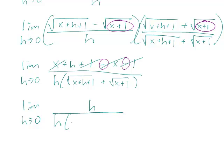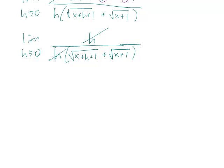And you can see already there's an h on the bottom that's going to go away. If I had multiplied this whole thing now, then it would be really hard for me to actually tell that I can cancel out the h.